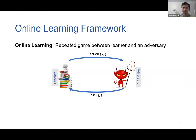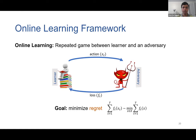The environment reveals a loss function ft, and the learner incurs a loss ft of xt in the t-th iteration. Note that we only get to know ft after we play xt. The goal of the learner is to minimize regret, where the first term is the cumulative loss suffered by the learner over T iterations, and the second term is the loss of the best action in hindsight. Regret measures how well we do compared to the best action in hindsight.